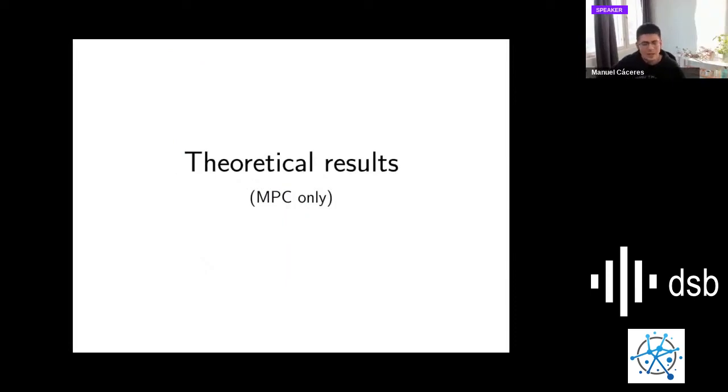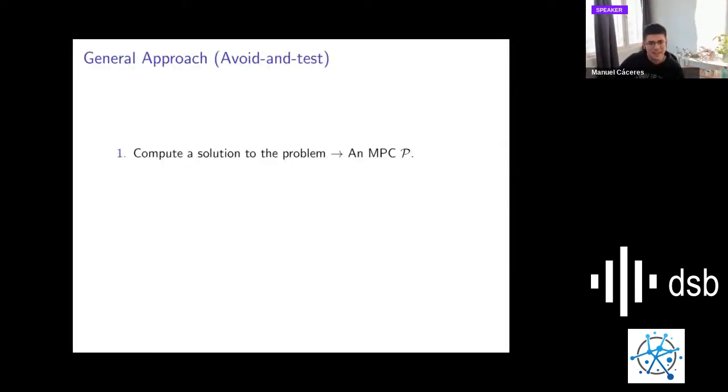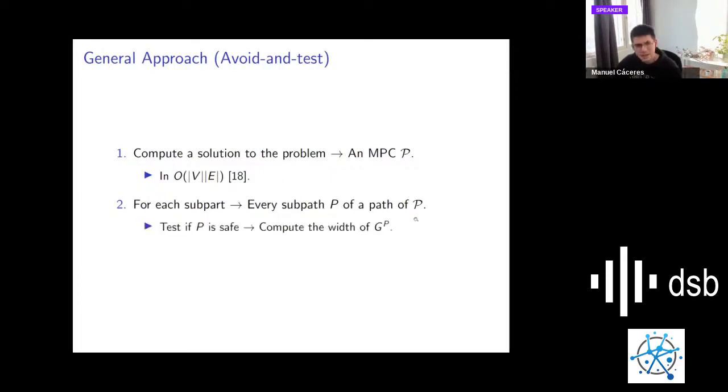Let's go now to theoretical results in more detail. I will present this only for minimum path cover because of time constraints. The general approach to obtain the maximal safe paths is first to compute a solution. Why? Because for a path to be safe, it has to be part of every solution. So in particular, it has to be part of some particular solution. We compute a minimum path cover in order V times E. Then for each sub-path of this solution, we test if this path is safe.